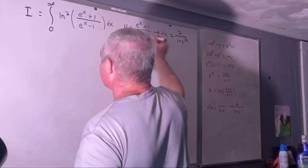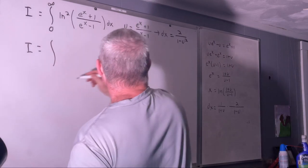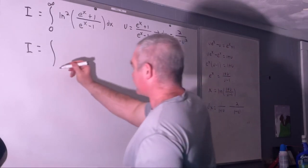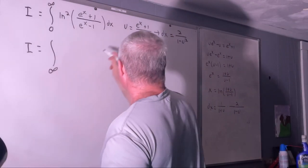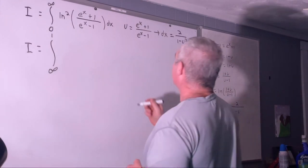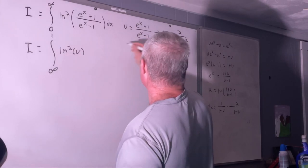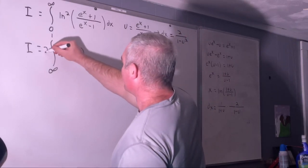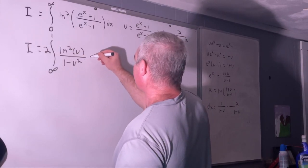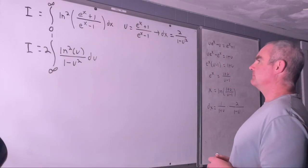Let's apply that substitution now to our integral i. So i is going to be equal to the integral — plugging in the lower bound 0 gives us infinity, and the upper bound gives us 1. The integrand becomes natural log squared of u, and our dx is 2 over (1 minus u²) du.